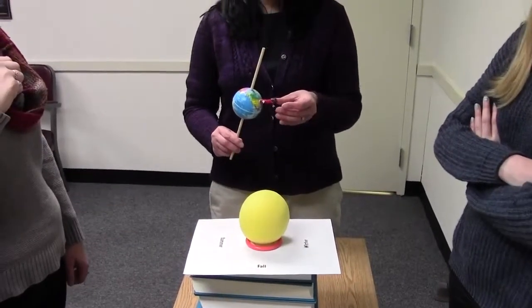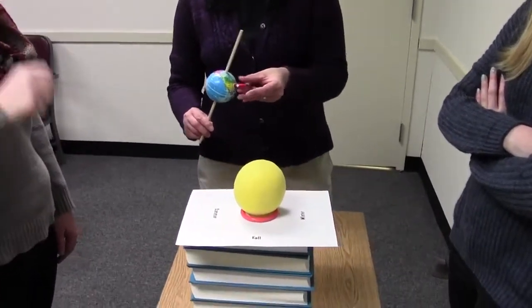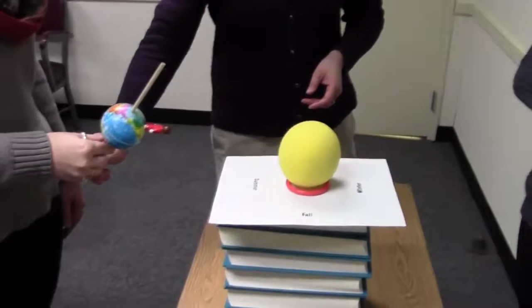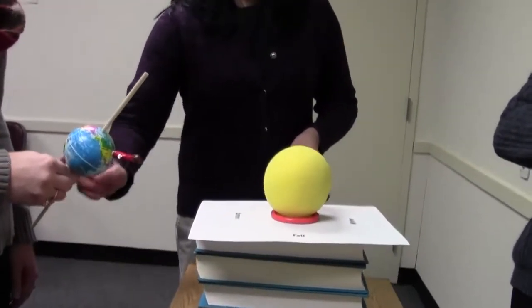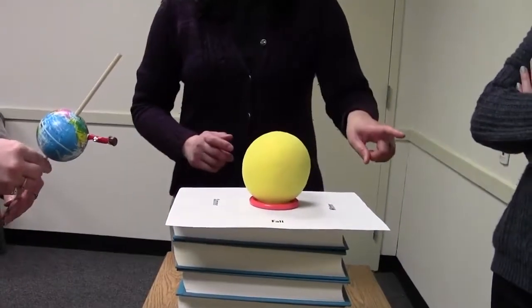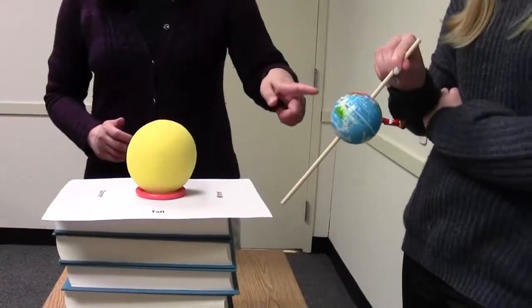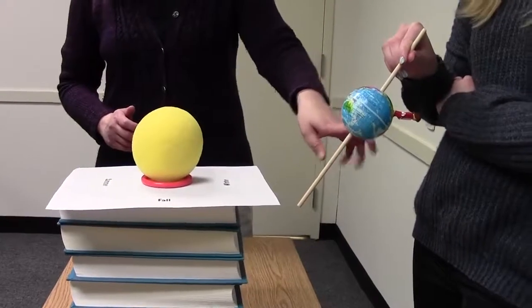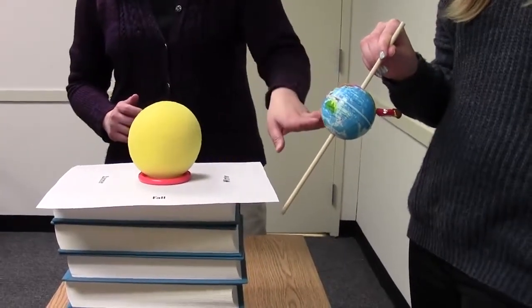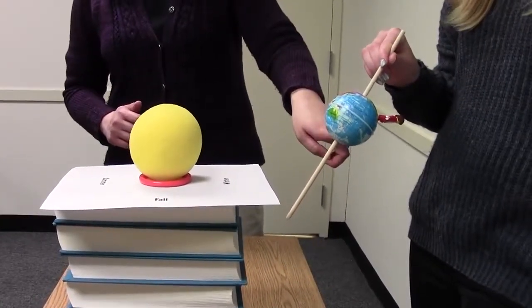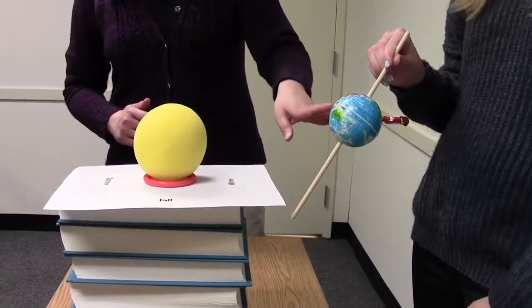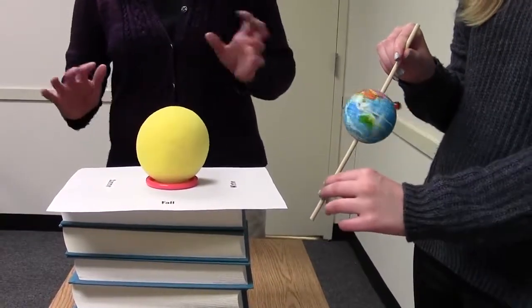And then the other issue that students run into is they look at the summer Sun angle and then they pass over to winter and they're on the nighttime side and they say that it is cold because the Sun is not shining on the person, and they're mixing up their day and night with their summer winter.